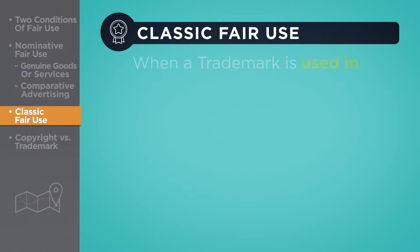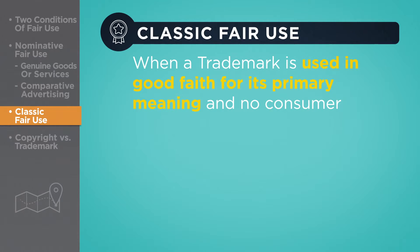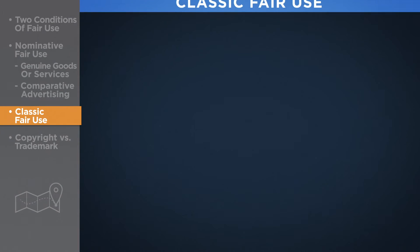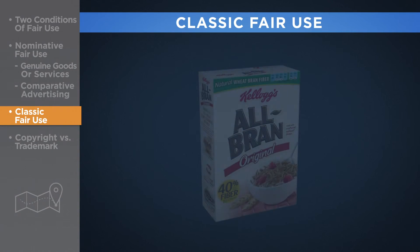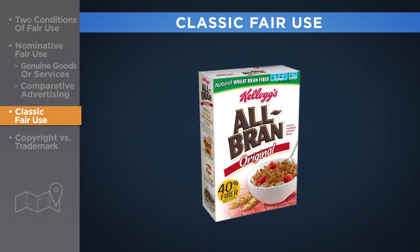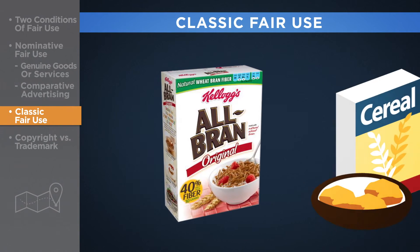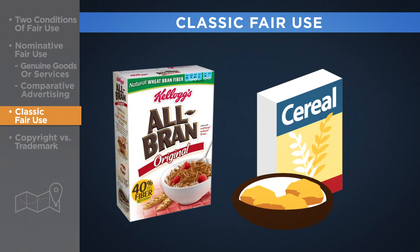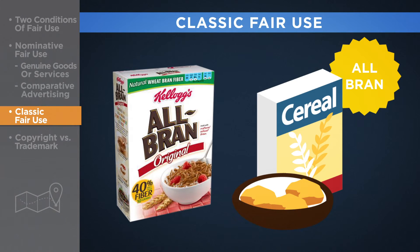Classic fair use occurs when a trademark is used in good faith for its primary meaning and no consumer confusion is likely to occur. Classic fair uses typically involve marks that are descriptive. For example, even though Kellogg's has gained secondary meaning for the mark All-Bran, another cereal manufacturer might be able to describe its cereal as All-Bran if indeed it consists entirely of the hard outer layers of cereal grains.